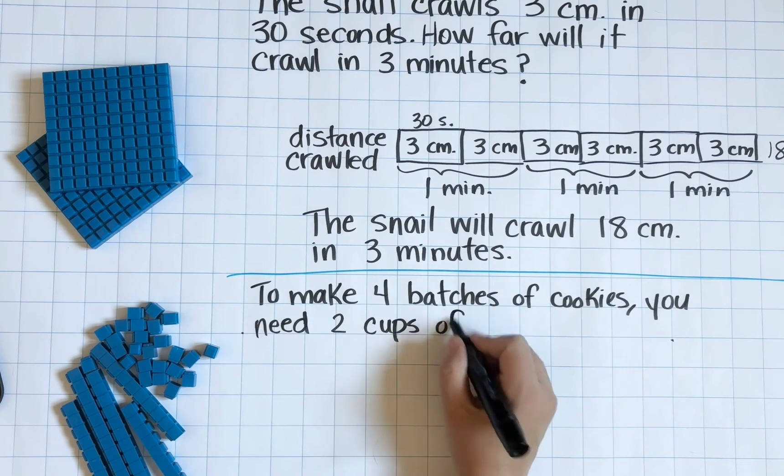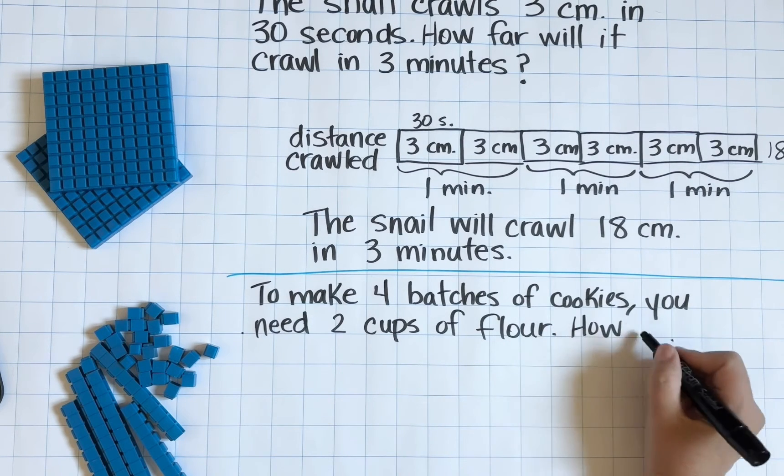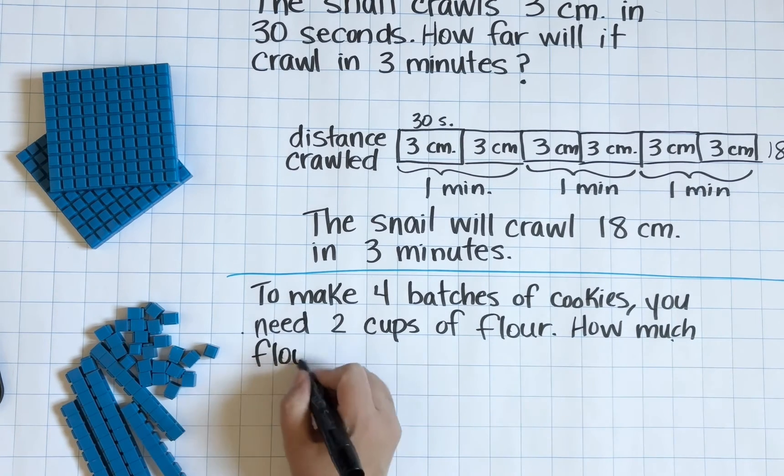This time we are making four batches of cookies. We need two cups of flour in all. We want to figure out how much flour we need for one batch of cookies.